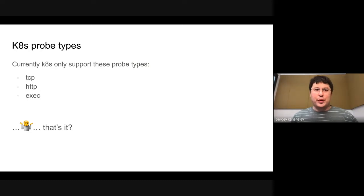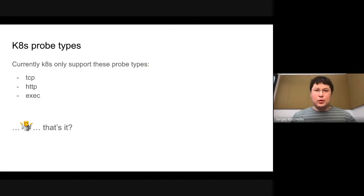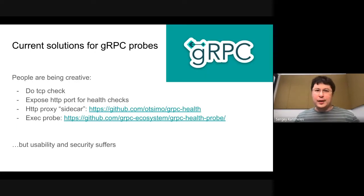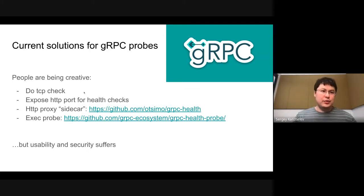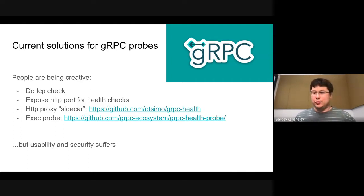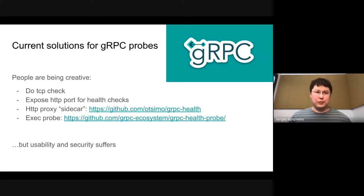You may notice there is no gRPC in this list. If you're running a gRPC application, what are your choices today? If you run a gRPC application, you have very few options. First, you can do a TCP check — all you can check against a gRPC endpoint is that the port is open. It's a weak check, and it probably will be OK even if the application is barely surviving, so TCP is not very helpful in most cases.